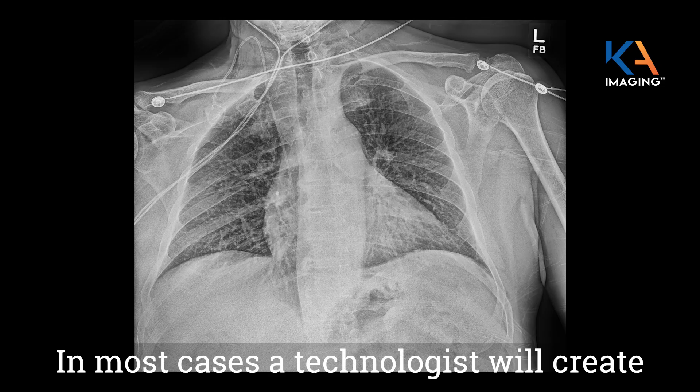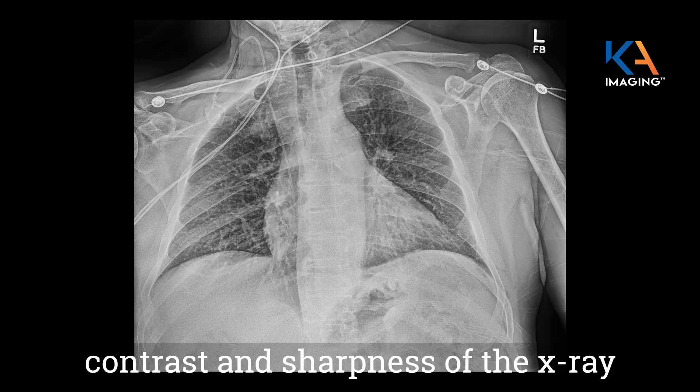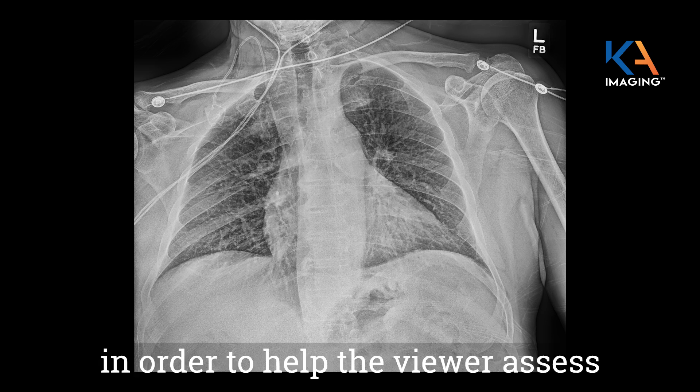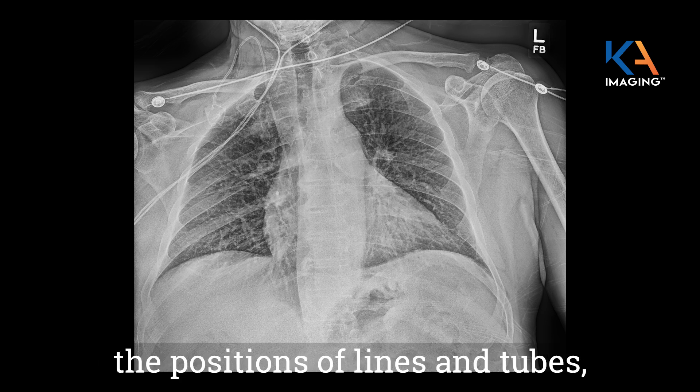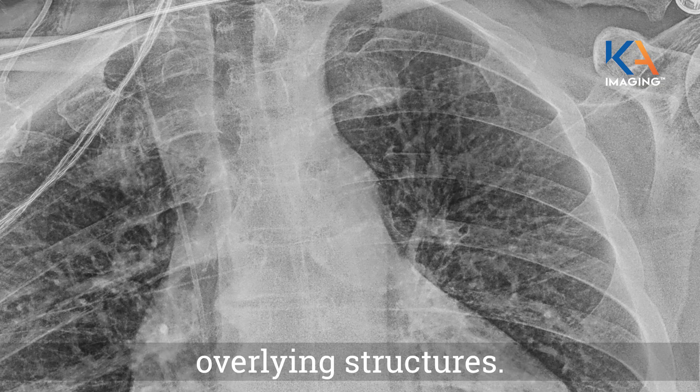In most cases, a technologist will create a companion image that changes the contrast and sharpness of the x-ray in order to help the viewer assess the positions of lines and tubes. But this does not remove overlying structures.